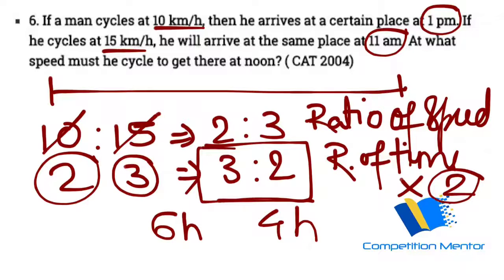So with 10 km per hour, you have time as 6 hours. With 15 km per hour, you have 4 hours. That is basic.